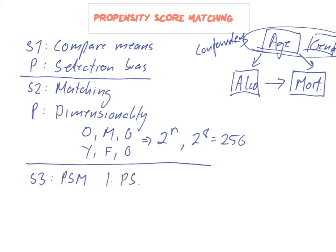The first step is to construct a propensity score, which is the probability of receiving treatment — in this case, the probability that a person drinks. To find this probability, you run a logistic regression: you know who drinks in the sample, and you know their age and gender, so you can estimate the probability that a person drinks.